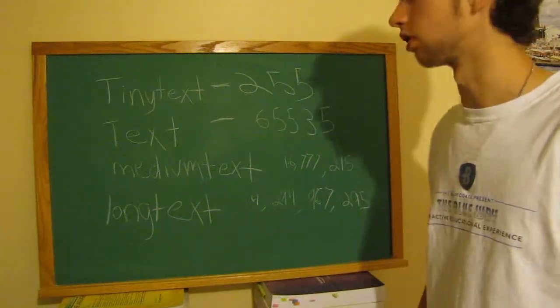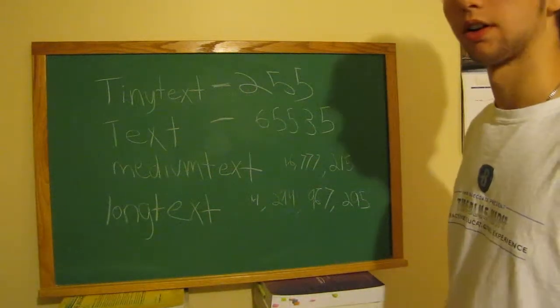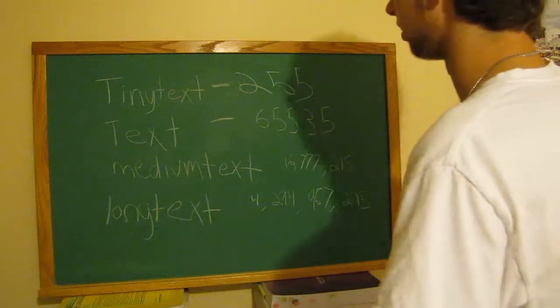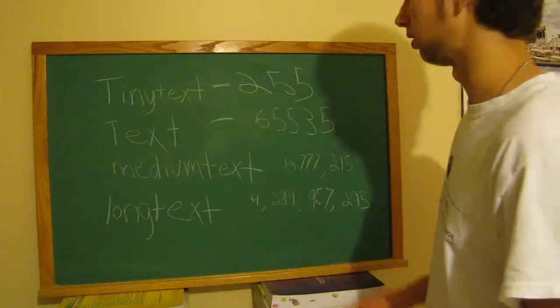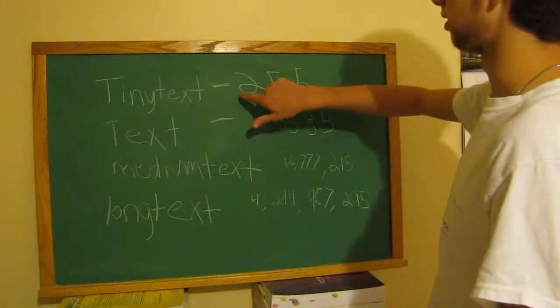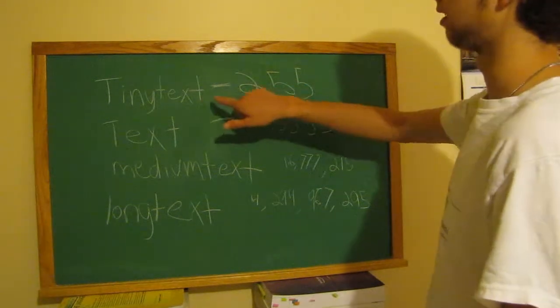Alright guys, this video will be over the text options. Now, there are four of them, and basically the one you want to use is the one that will store what you need. As you can see, these are the numbers that these will store.